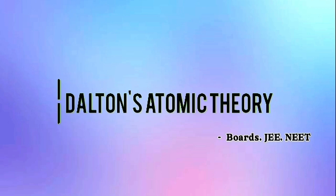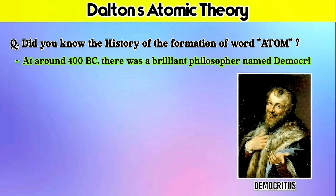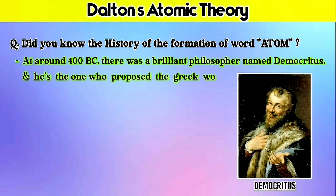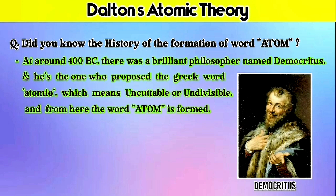So before going to the theory, did you know the history of the formation of the word atom? To know this, we have to go to ancient Greece of 400 BC. At that time, there was a brilliant philosopher named Democritus, and he is the one who proposed the Greek word 'atomio', which means uncuttable or indivisible. And from here, the word atom is formed.